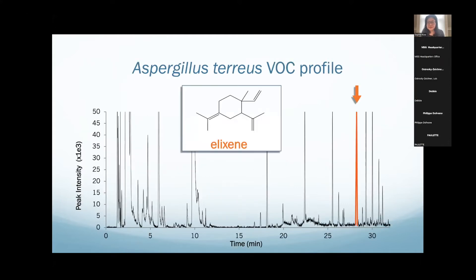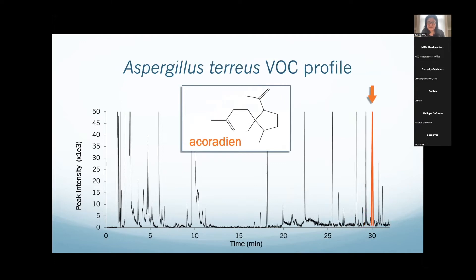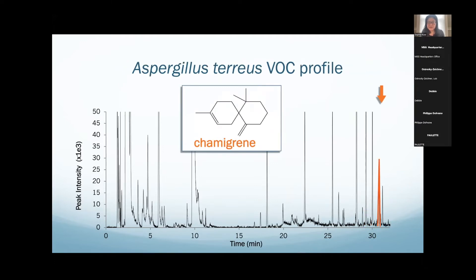Aspergillus terreus, for example, uses terpene cyclases to create many different structures — elixene, santalene, elemene, acoradiene, and chamagrene — a very different suite of biosynthetic products. It doesn't have that many terpene cyclases, but it takes that 15-carbon chain and turns it into all sorts of products because it's catalytically promiscuous — it's not that good of an enzyme, so it takes the same substrate and turns it into many different things almost by accident.